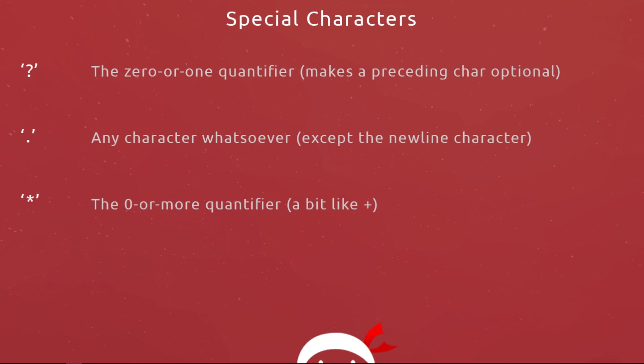Next is the period or dot, which means match any character whatsoever except the newline character. If we placed an at symbol it would match, if we placed a caret it would match — any character at all. Then if you see a star, this means zero or more. It's similar to the plus sign, but whereas the plus sign means at least one or more, the star means zero or more — so it can appear zero times or 500 times.